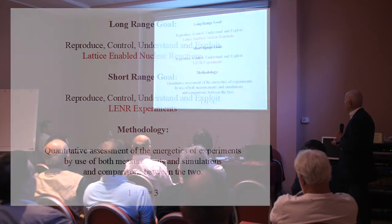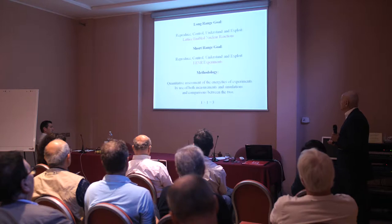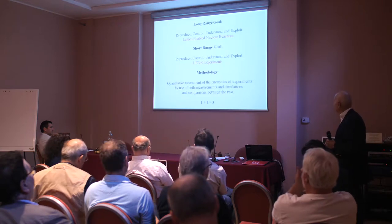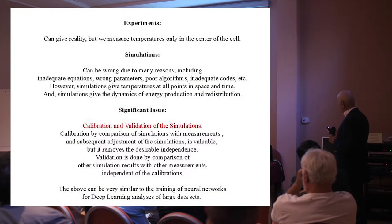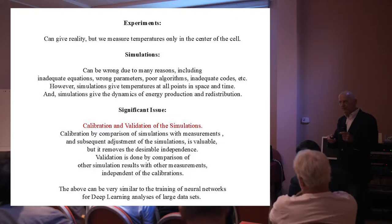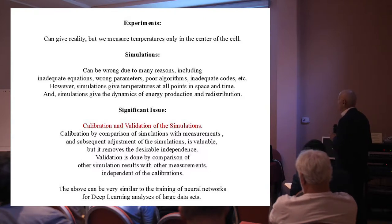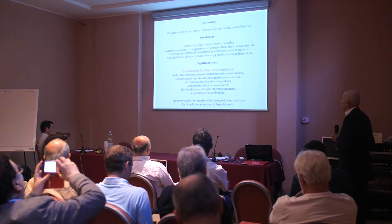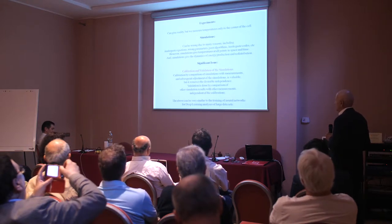We're trying to do quantitative assessment of the energetics of experiments — measurements and simulations. If you have one thing and another thing, you get more than just the two things from their comparison. Experiments done right can give reality — we measure temperatures in the center of a cell. Simulations can be wrong for many reasons, but they give temperatures at all points in space and time, and they can give the dynamics of energy production, whether resistive heating or LENR, and the subsequent redistribution of energy. Issues in doing simulations are calibration and validation. You can calibrate a simulation by comparison with experiments, but that removes their independence — a sacrifice.